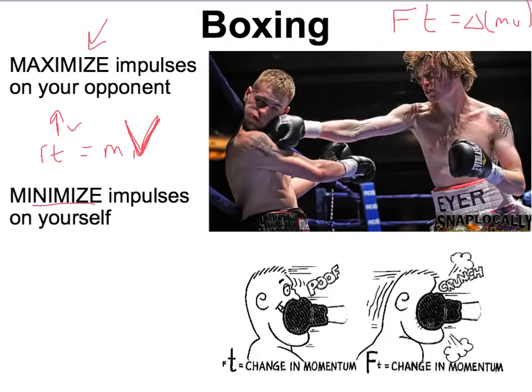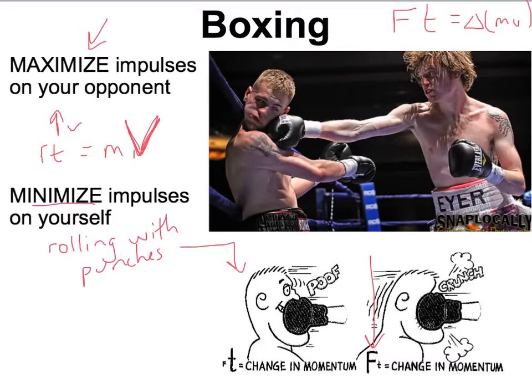How do you avoid high impulses on yourself? This is a strategy called rolling with the punches, shown in an illustration from your physics book. If you just keep your face in place, you feel a very large force. But if you move your head with the punch — rolling with the punch — the time that you get hit becomes extended. You still feel the same impulse, but the force is less, because you increase that time and decrease the force.